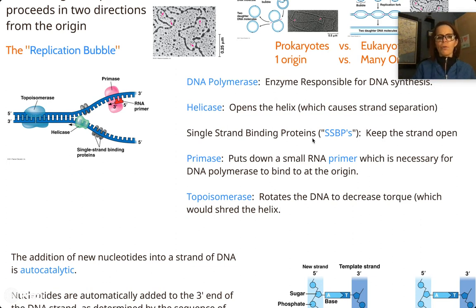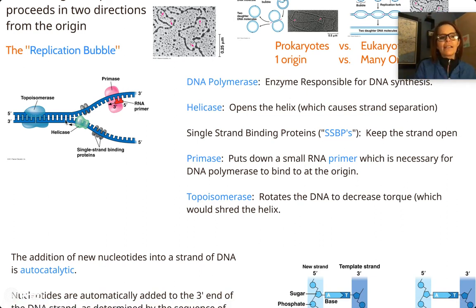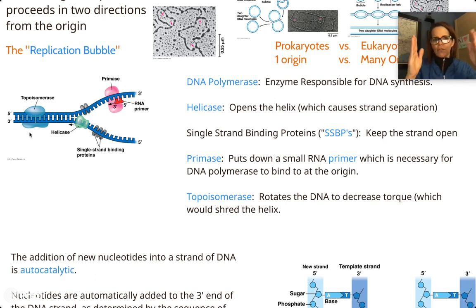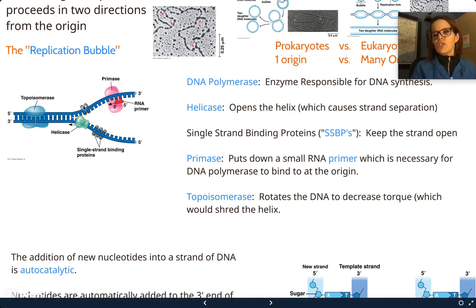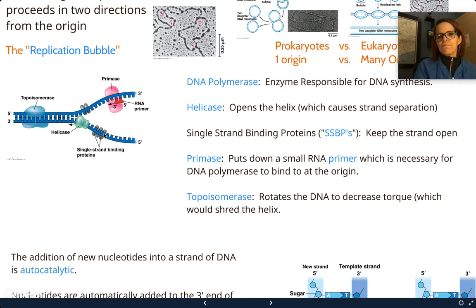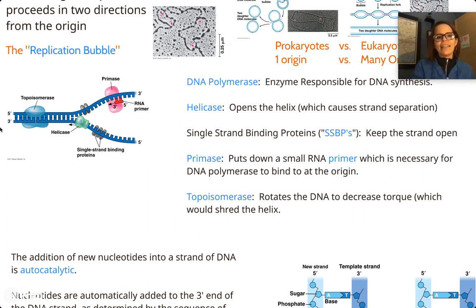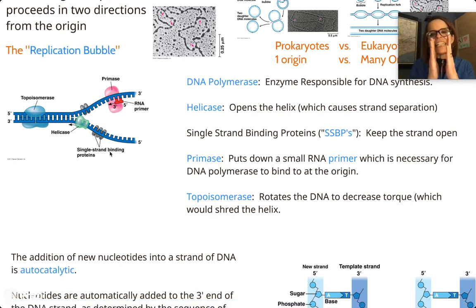Topoisomerase's job is to untwist the DNA — when it's all twisted up, we can't do this process. Then helicase unzips the DNA, separating the two sides from each other. The single-strand binding proteins attach because the two sides of DNA are attracted to each other — when we unzip them, they tend to zip right back up. So we put proteins in the way so they can't re-anneal. That's the single-strand binding proteins.